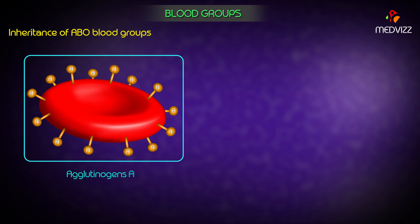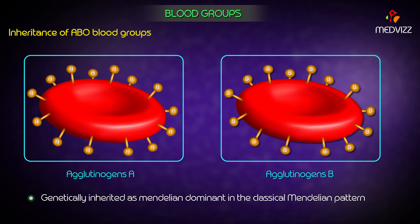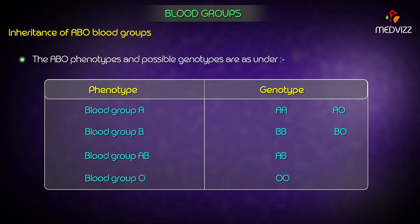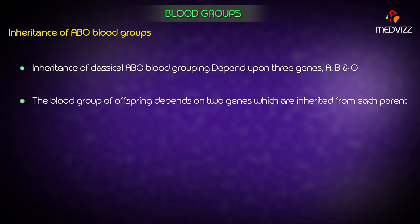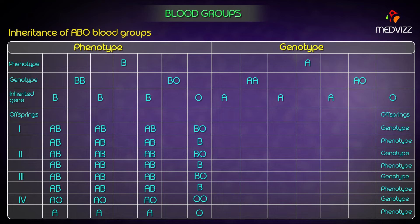Agglutinogens A and B are genetically inherited as Mendelian dominant in the classical Mendelian pattern. The ABO phenotypes and possible genotypes follow the classical pattern. Inheritance of ABO blood grouping depends upon three genes: A, B, and O. The blood group of offspring depends on two genes inherited from each parent.